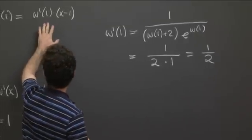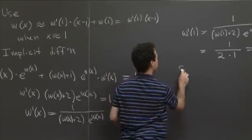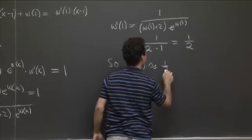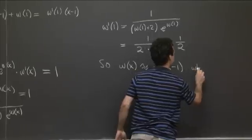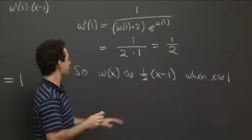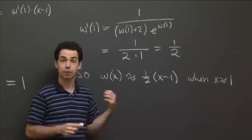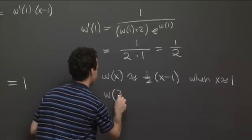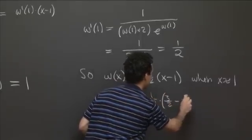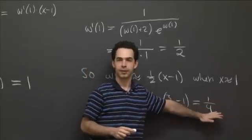Taking that back to our linear approximation formula: w(x) ≈ w'(1) · (x − 1) = (1/2)(x − 1), which is good when x is near 1. At the particular point x = 3/2: w(3/2) ≈ (1/2) · (3/2 − 1) = (1/2) · (1/2) = 1/4. So our estimate is w(3/2) ≈ 1/4.